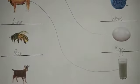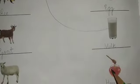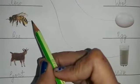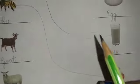Next is bee. What does bee give us? Bee gives us honey. This is honey. So, match the picture of bee with the picture of honey over here.